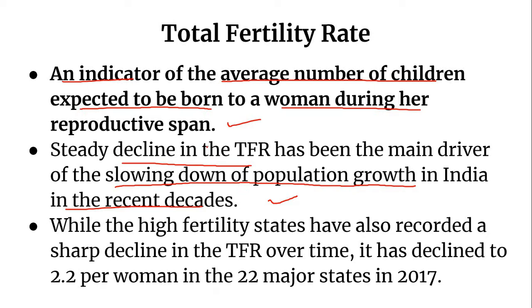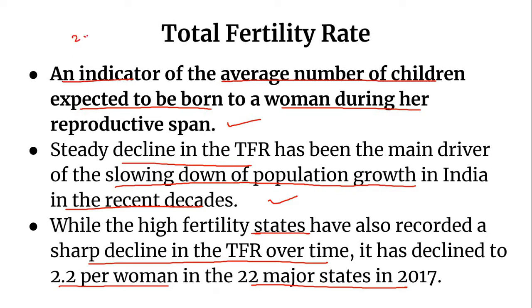Consequently, this has several implications for policy, as population growth is set for a slowdown in the coming decades along with an increase in the share of the working age population. While the high fertility states have also recorded a sharp decline in TFR over time, it has declined to 2.2 per woman in the 22 major states in 2017. However, due to the skewed sex ratio, the effective replacement level fertility is higher than the benchmark of 2.1.